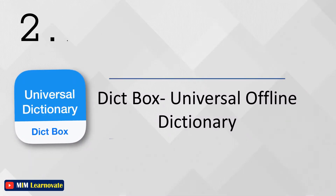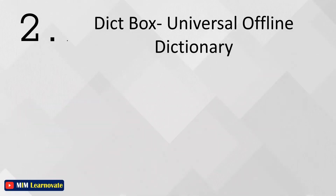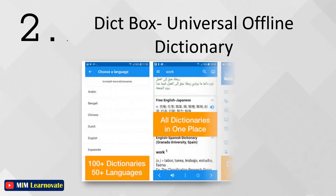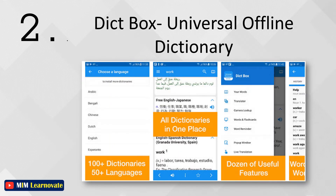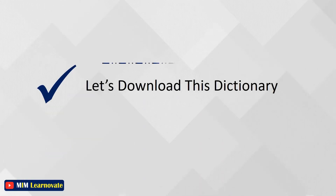The second app is Dictbox Universal Offline Dictionary. In this dictionary, no internet is required. It is fast and easy to use, with pronunciation for any text, ability to find similar phrases or sentences, ability to install more dictionaries, more languages, and much more features.